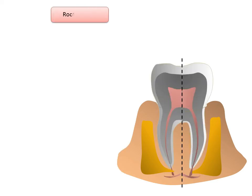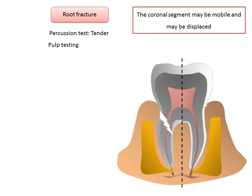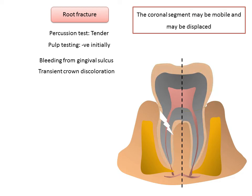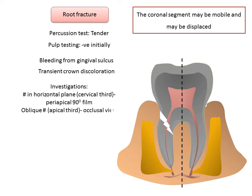Root fracture: sensibility testing may give negative results initially, indicating transient or permanent neural damage. The tooth may be tender to percussion with bleeding from the gingival sulcus. Transient crown discoloration — red or grayish — may occur. Horizontal fractures are usually detected on a regular periapical 90-degree angle film, especially for cervical third fractures. More oblique fractures, common in the apical third, are better demonstrated with an occlusal view or radiographs at varying horizontal angles.